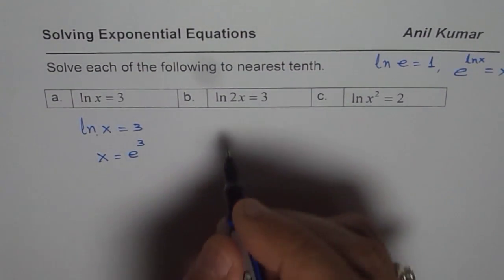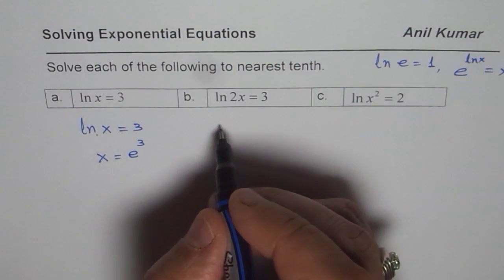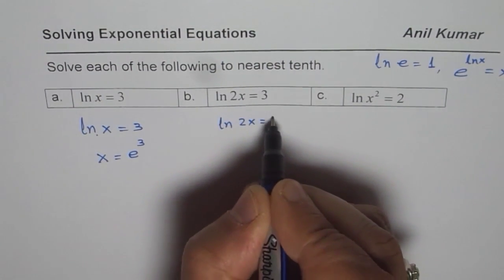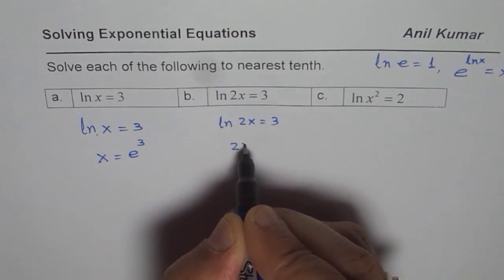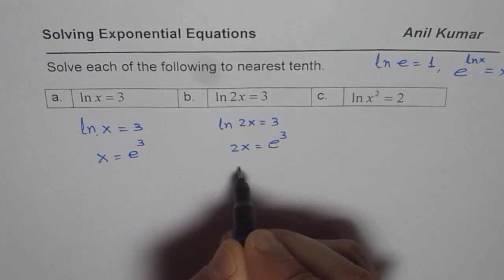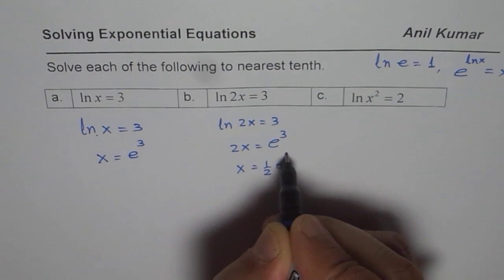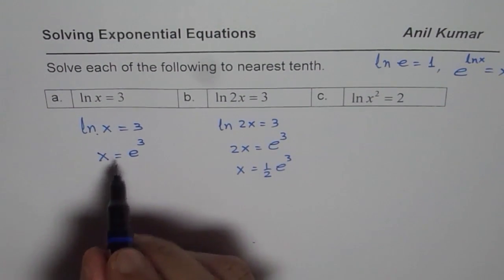Let us do the next one. ln 2x equals 3. So we get 2x equals e to the power of 3, or x equals half of e to the power of 3. So this answer will be half of that answer.